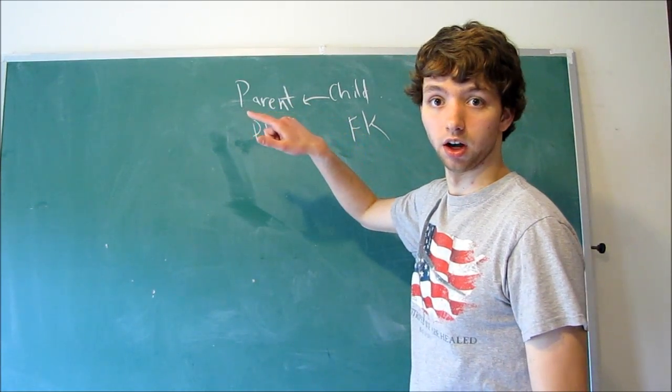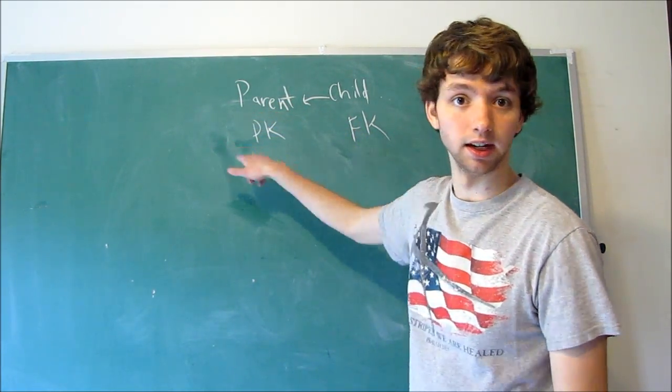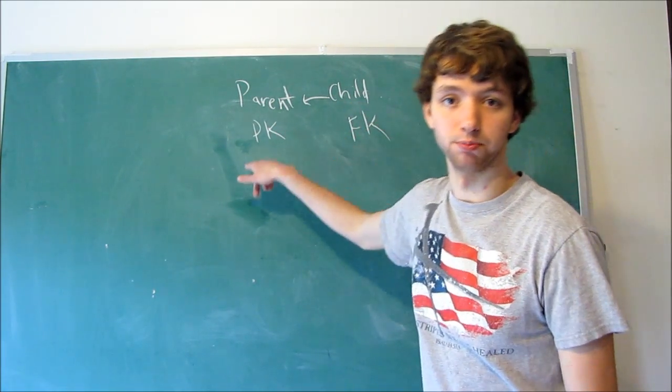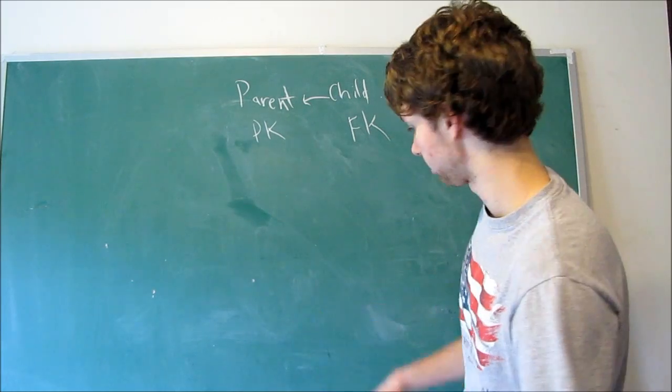For example, the parent's ID is 86, then the foreign key pointing back to the parent is 86. It's the child.